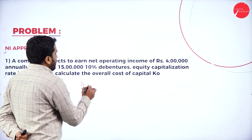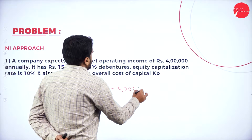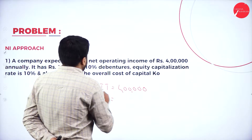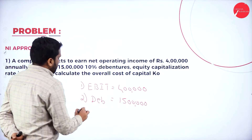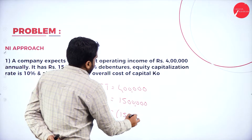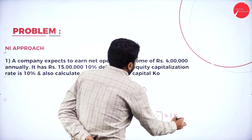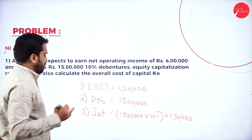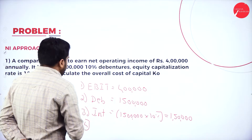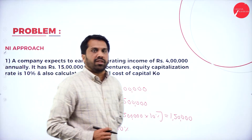In this problem, we have EBIT of around 4 lakh. Debentures are 15 lakh. Interest is 15 lakh multiplied by 10%, so it is 1 lakh 50,000. The cost of equity, or equity capitalization rate KE, is equal to 10%. These are the pieces of information already available.